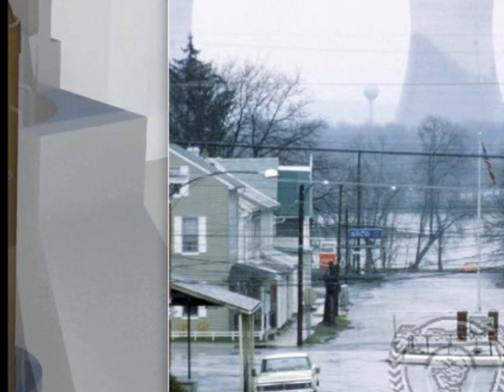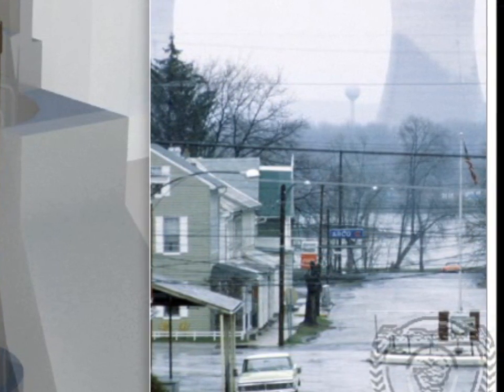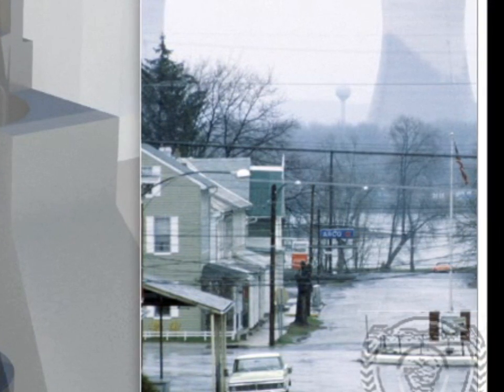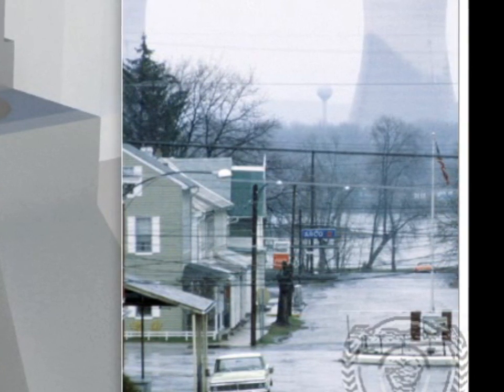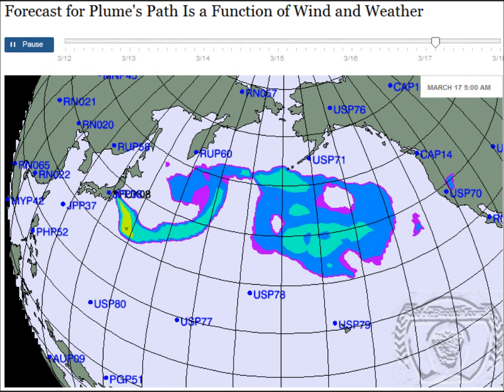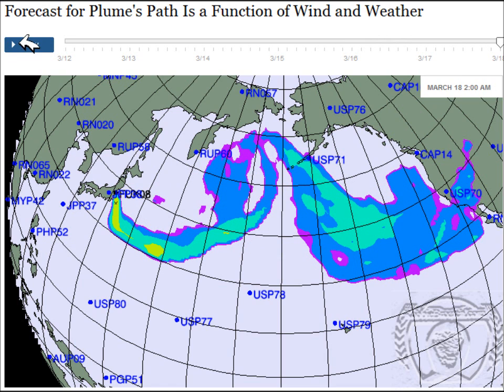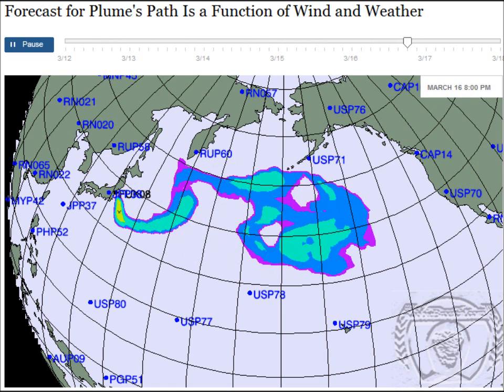In Chernobyl in 1986, a poorly designed test of the cooling system caused a huge power spike. The reactor exploded. There was no containment vessel, so radioactive gases and materials were spewed into the atmosphere.